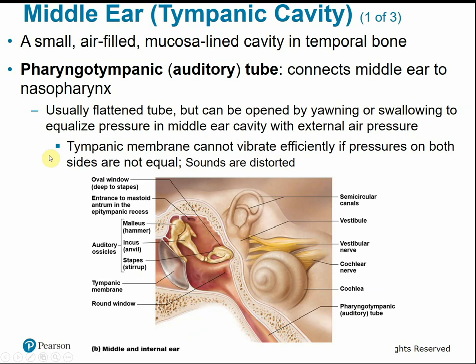The tympanic cavity is a mainly air-filled, mucosal-lined space. The pharyngotympanic or auditory tube connects the middle ear to the nasopharynx — when you're sick and your ears drain, they drain into the back of the nose and throat. Normally this tube is flattened but can open, causing the ears to pop when yawning or swallowing. The tympanic membrane can't vibrate efficiently if pressure is unequal on both sides, causing muffled sound on one side.